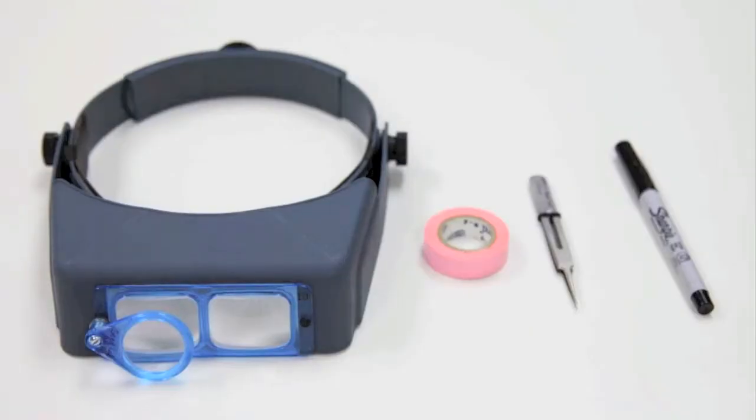During the next part of this module, you'll be performing a real genetic cross between the wild type Columbia and GL1 mutant plants. For these crosses, you will need your Optivisor, a pair of tweezers, some tape, and a marker.